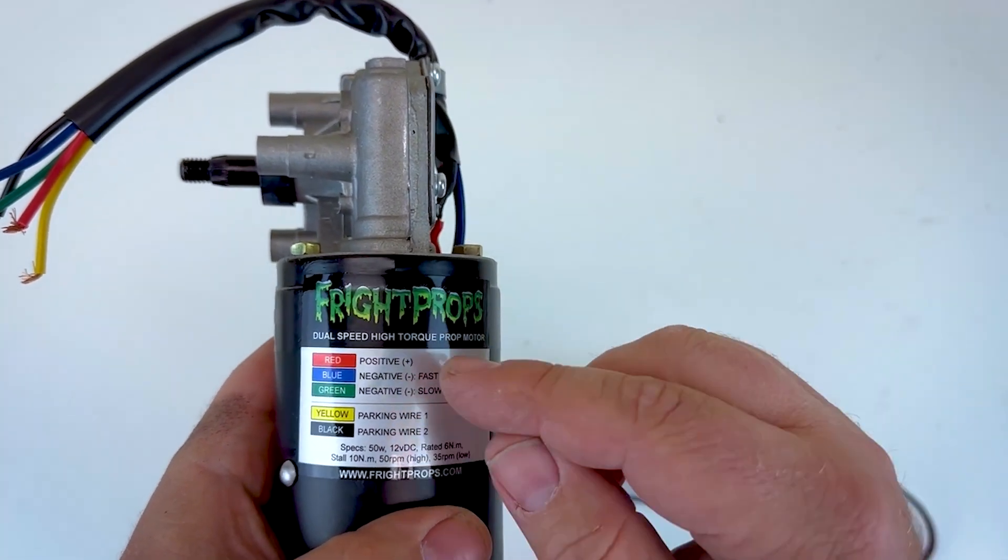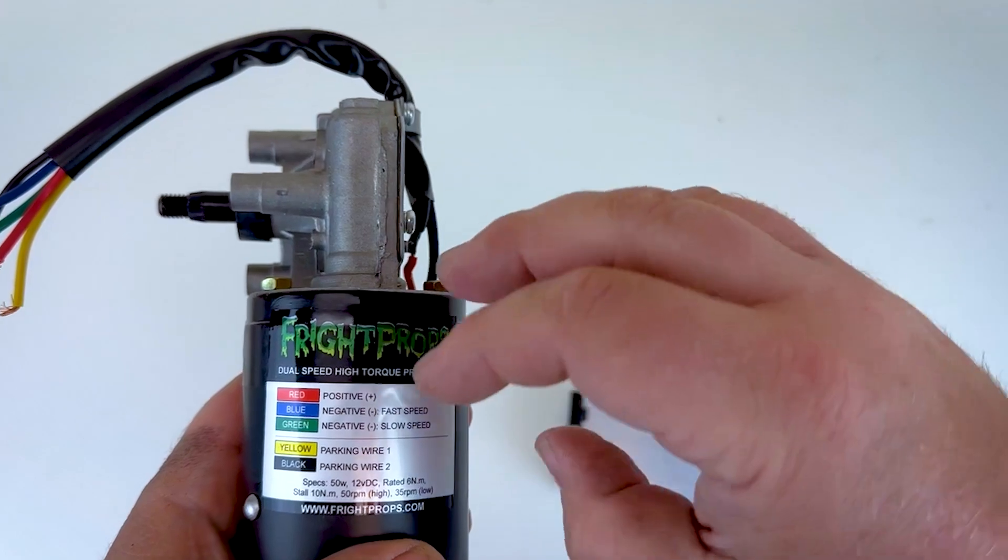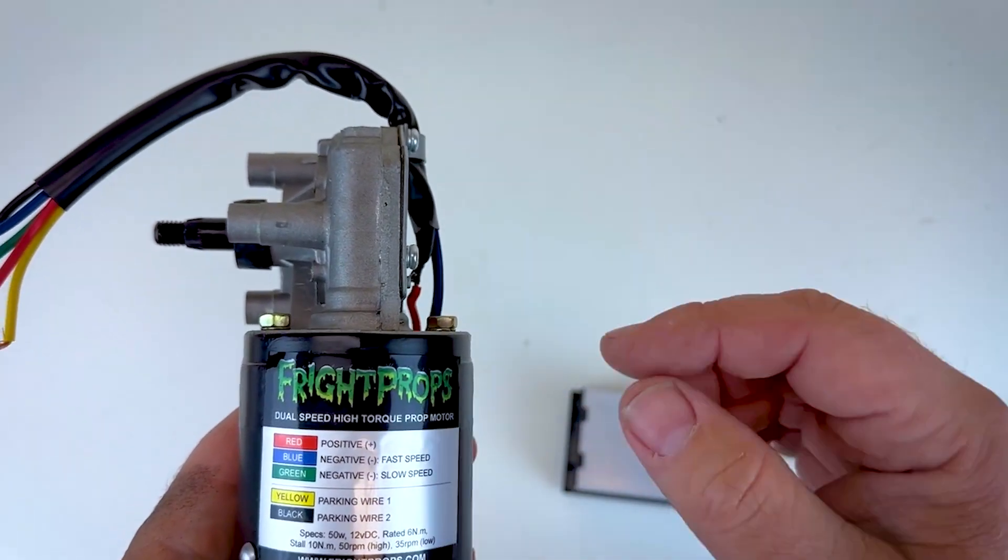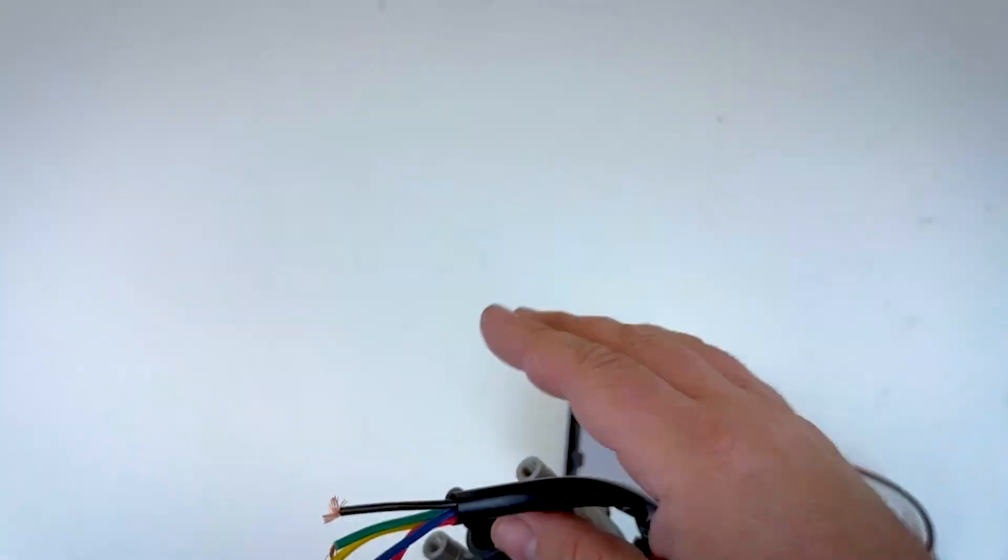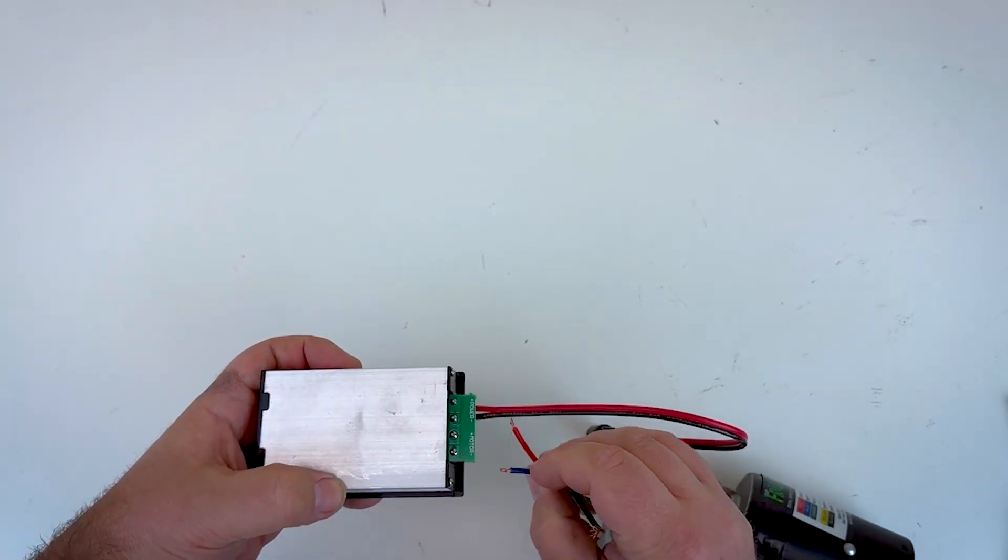When you're using a speed controller you always want to use the fast speed because you want the motor to be able to go as fast as it can and then you can use the speed controller to slow it down if needed. So we're going to be using our red and blue wires. We're just going to take the red wire and install it into plus and the blue into negative.